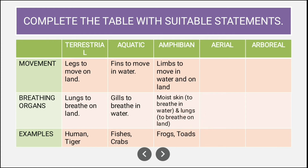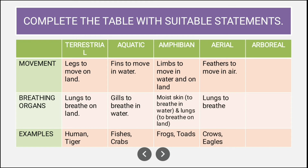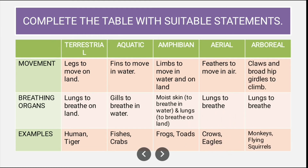For aerial animals: they have feathers to move in air and lungs to breathe. Examples are crows and eagles. For arboreal animals: they have claws and broad hip girdles to climb, and lungs to breathe. Examples are monkeys and flying squirrels.